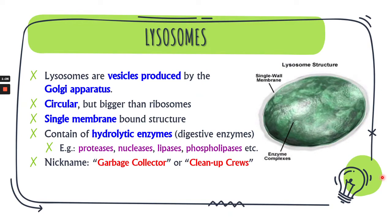The lysosome is a circular shape but slightly bigger than the ribosomes. It is a single membrane-bound structure that contains hydrolytic enzymes, which are digestive enzymes such as proteases, nucleases, lipases, phospholipases, and others. That is why the lysosome is sometimes also known as a garbage collector or the cleanup crew.